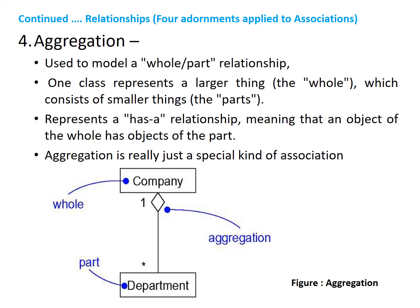The next adornment is aggregation. Sometimes you will want to model a whole-or-part relationship, in which one class represents a larger thing — the whole — which consists of smaller things — the parts. This kind of relationship is called aggregation, which represents a 'has a' relationship, meaning that an object of the whole has objects of the part. Aggregation is a special kind of association, and is specified by adorning a plain association with an open diamond at the whole end. In this figure, Company represents the whole, whereas Department represents the part — that is, Department is part of the Company.